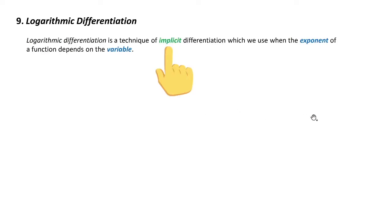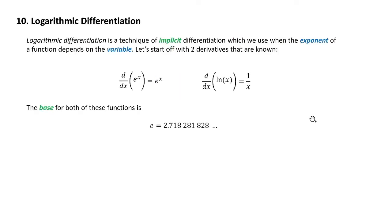This lecture is going to focus on logarithmic differentiation. It's a technique of implicit differentiation which we use when the exponent of the function depends on the variable. That's the key feature here - the exponent depends on the variable.